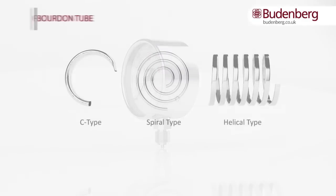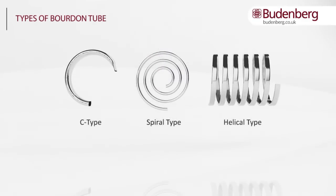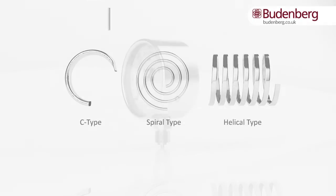There are three types of Bourdon tube. The C-type which is the most common and tends to be used for lower pressure applications. The spiral shape which is used for medium pressure applications. And finally, the helical-type shape which is used for very high pressure applications.